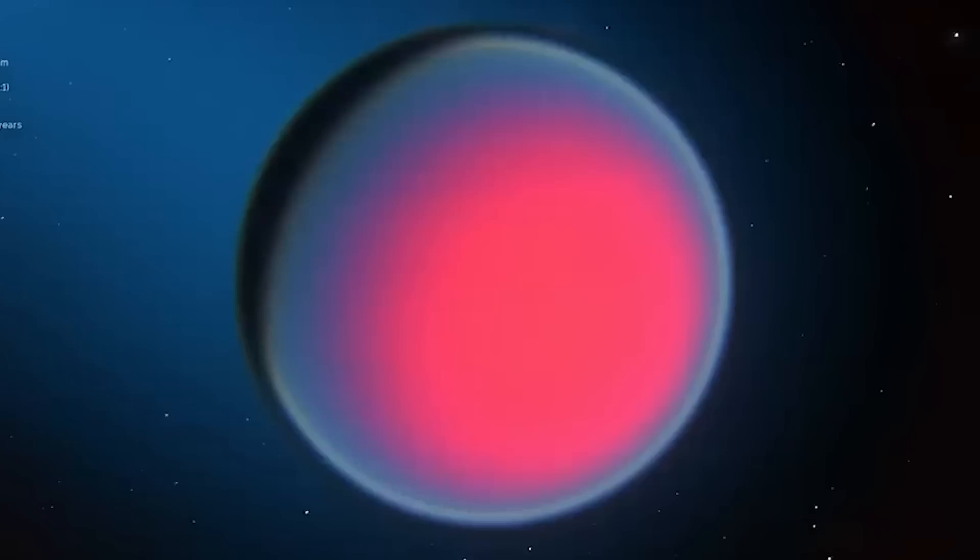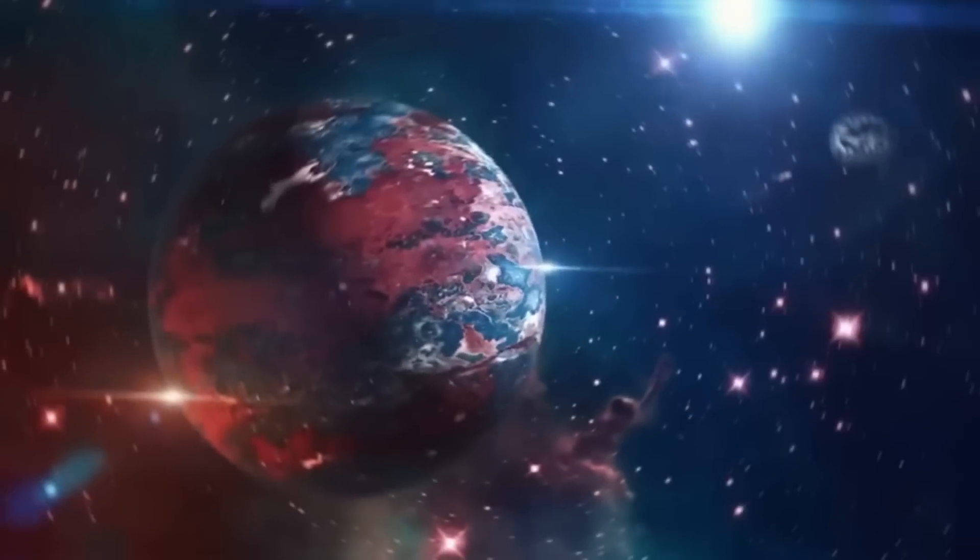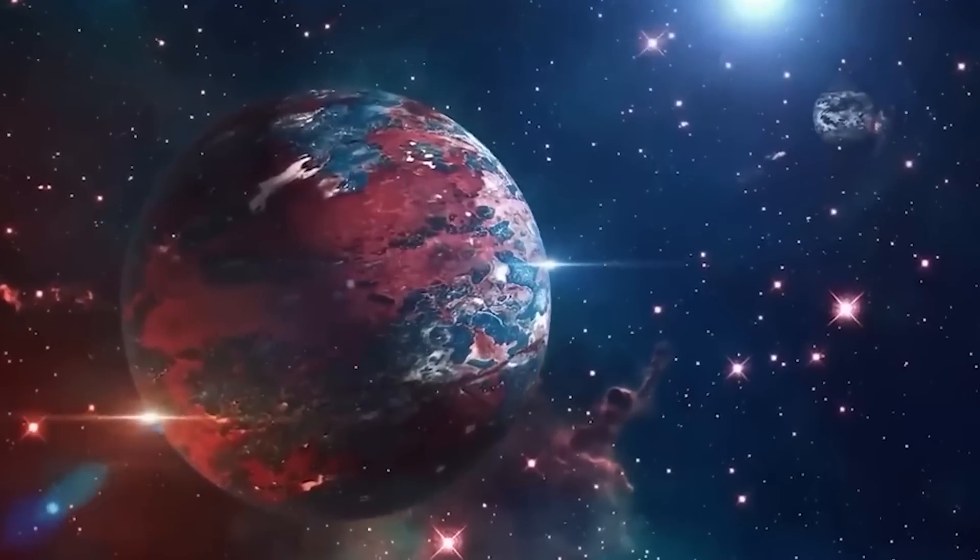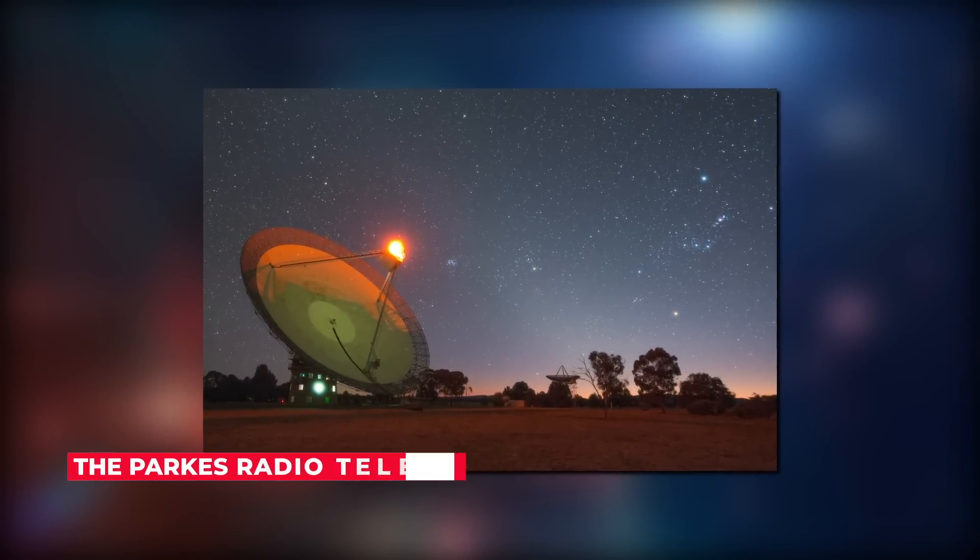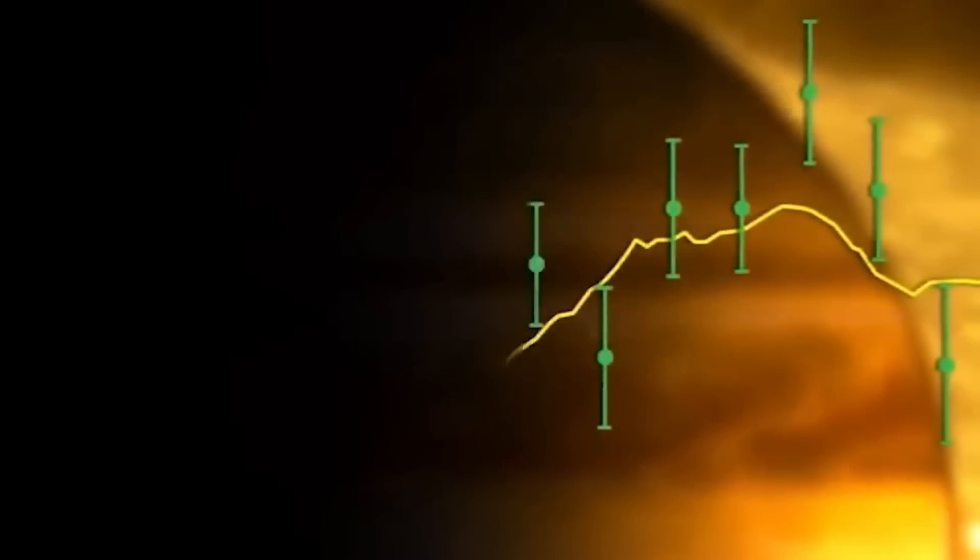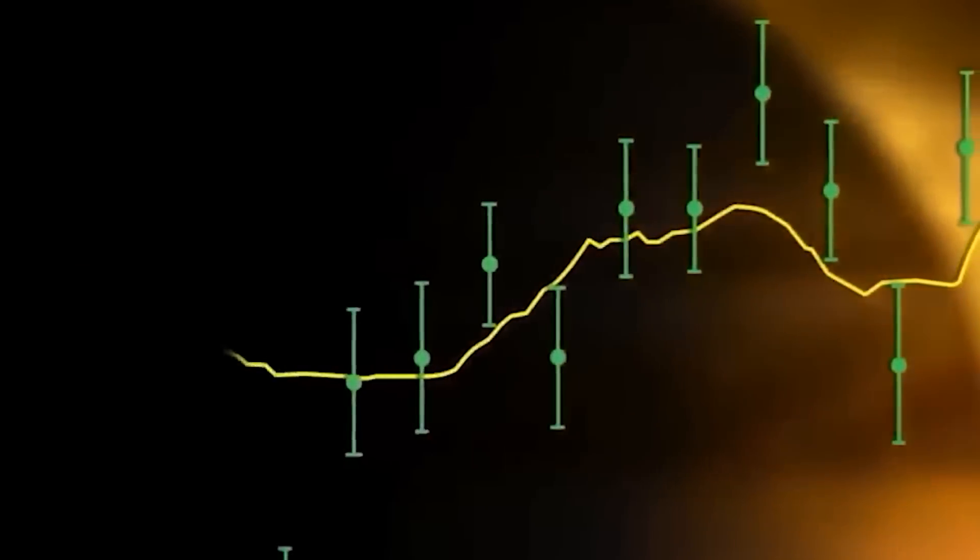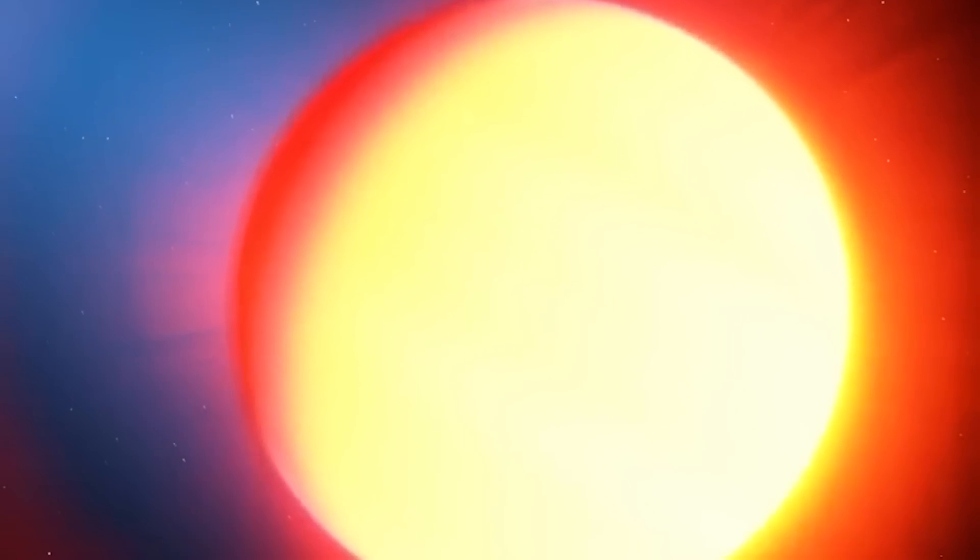In previous years, an unusual radio signal emanating from Proxima b was discovered. Despite how bizarre it may sound, the Parkes radio telescope in Sydney, Australia received this signal. Approximately 30 hours elapsed before the transmission ceased. Each time they turned the antenna away from Proxima Centauri, the signal was lost.